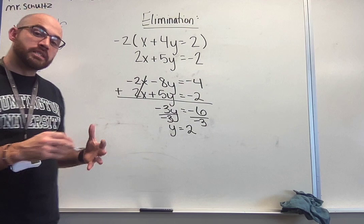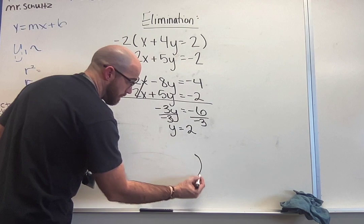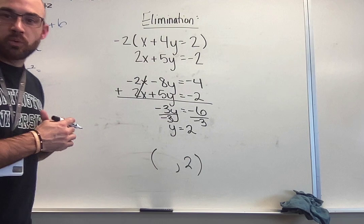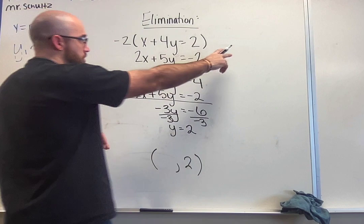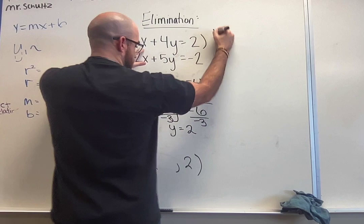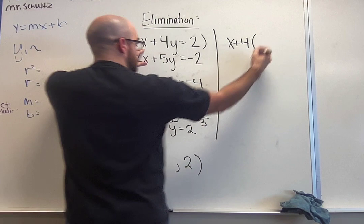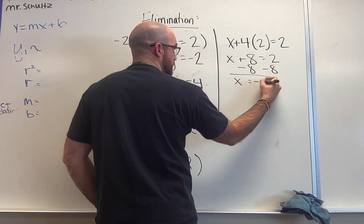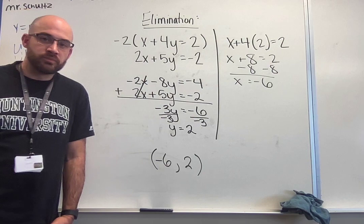Just like in substitution, we now have half of our answer. I have 2 as my y value. Now I need to plug this back in to either problem to solve for my x. For this one I'm going to plug it into the first one. It doesn't matter which one you do this for, it should get you the correct answer. I'm going to do this top one here. I have the y value, so x + 4 times 2 = 2. 4 times 2 is 8. I'm going to solve by subtracting 8 from both sides, so I would end up with x = -6. So my answer is (-6, 2).